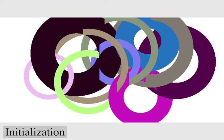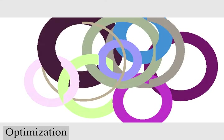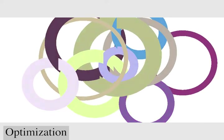Our first example will be to match the parameters of a shader that can draw rings so that it matches the Olympic Rings logo shown here. Our optimization starts with a random initialization and of course it looks nothing like the target.